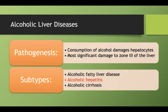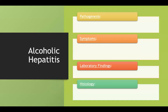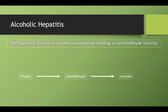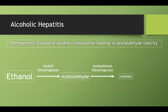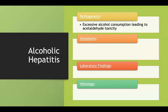Now let's talk about alcoholic hepatitis specifically. With excessive alcohol consumption, you get acetaldehyde toxicity — so much alcohol is coming in that it overwhelms these enzymes and you get a buildup of acetaldehyde. This leads to right upper quadrant pain, hepatomegaly, and fever.